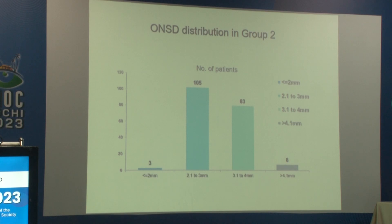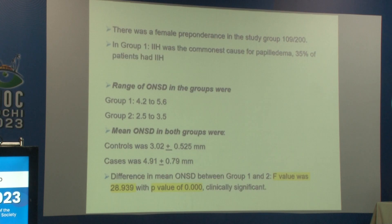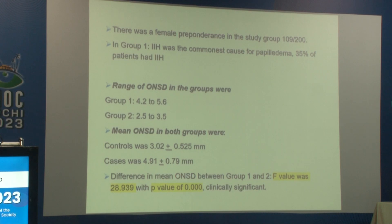The maximum distribution in Group 2 (controls) was around 2.1 to 3 mm. The range of ONSD in Group 1 was 4.2 to 5.6 mm with an average of 4.91 mm, while in Group 2 it was 2.5 to 3.5 mm with an average of 3.02 mm. The difference between groups was clinically significant.